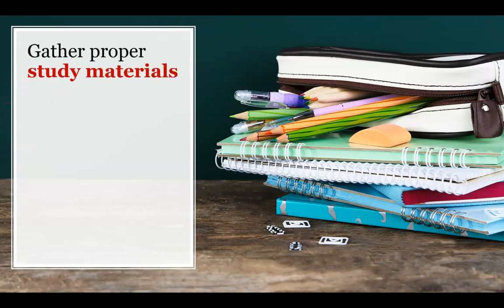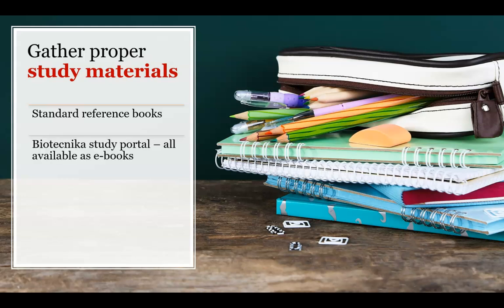The next step is to gather proper study materials. Standard reference books are essential — for biochemistry, Lehninger; for cell biology, Karp or Cooper or Lodish; for molecular biology, Watson. Get your standard books together. If you don't want hard copies, that's okay — as a Biotechnica student you get access to a study portal where all these books are available as ebooks, along with other standard books we have made available to our students.